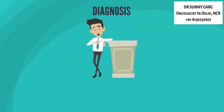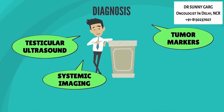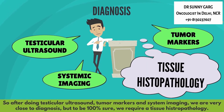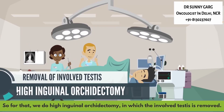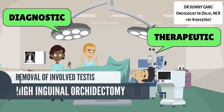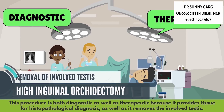After doing testicular ultrasound, tumor markers, and systemic imaging, we are very close to the diagnosis. But to be 100% sure, we require tissue histopathology. So we do high inguinal orchidectomy, in which the involved testis is removed. This procedure is both diagnostic and therapeutic because it provides tissue for histopathological diagnosis as well as removes the involved testis.